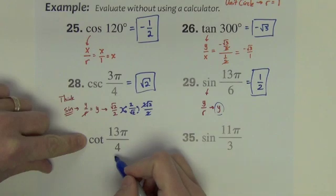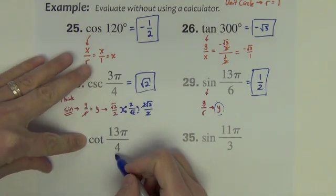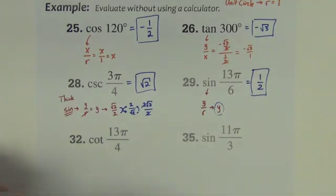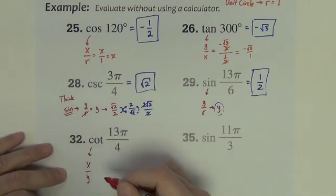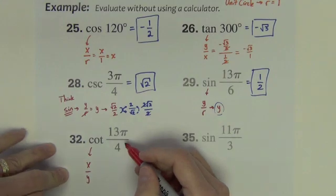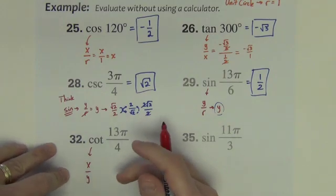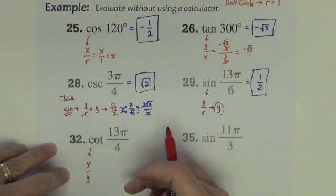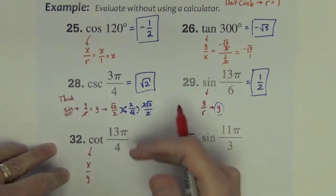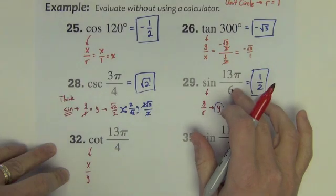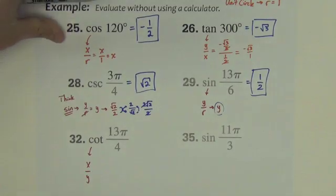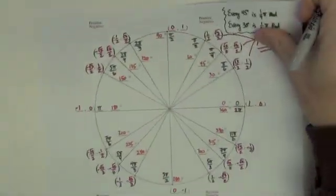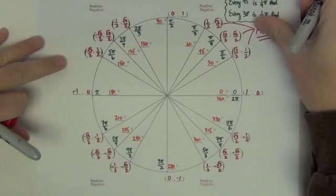Next, cotangent 13 pi over 4. Cotangent is the x divided by the y. So 13 pi over 4. We have to find it. We're going to have to count up just like we did and count past a full circle just like we did this one. But count on the fourths. I'll even bring it back so we can see how to do it exactly.